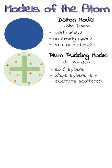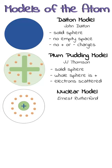The next model was the nuclear model by Ernest Rutherford. This model was mostly empty space, but it had most of the mass concentrated at the centre in the nucleus, and the electrons were arranged around it.